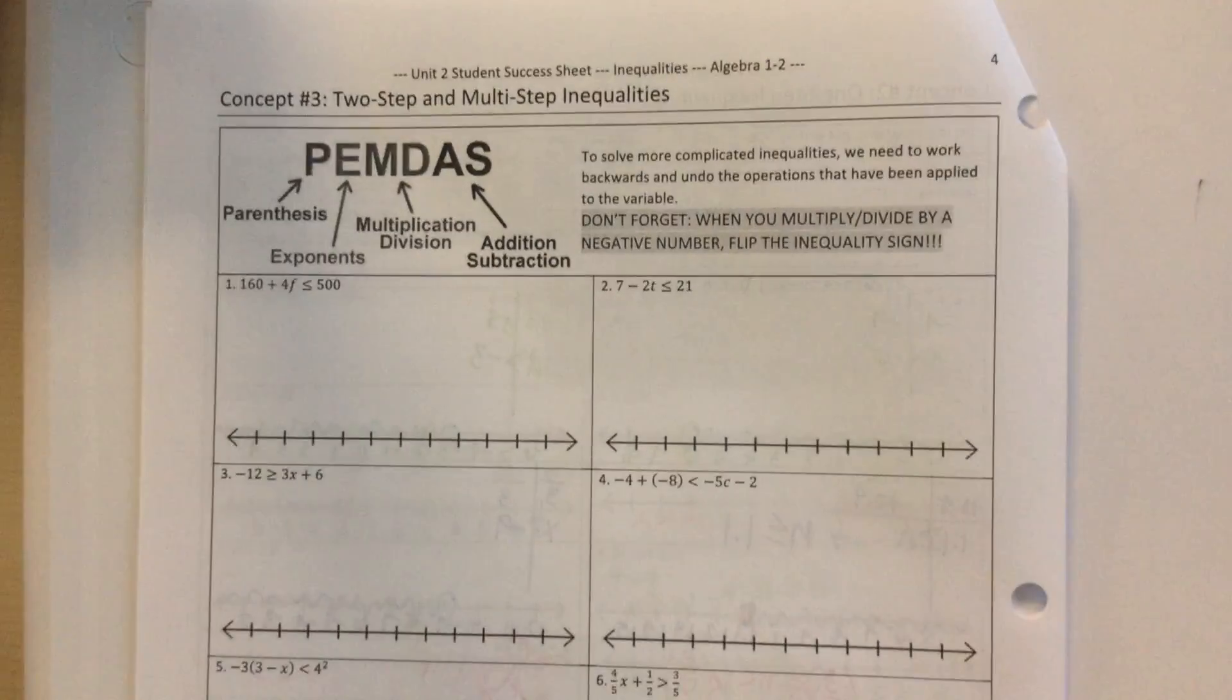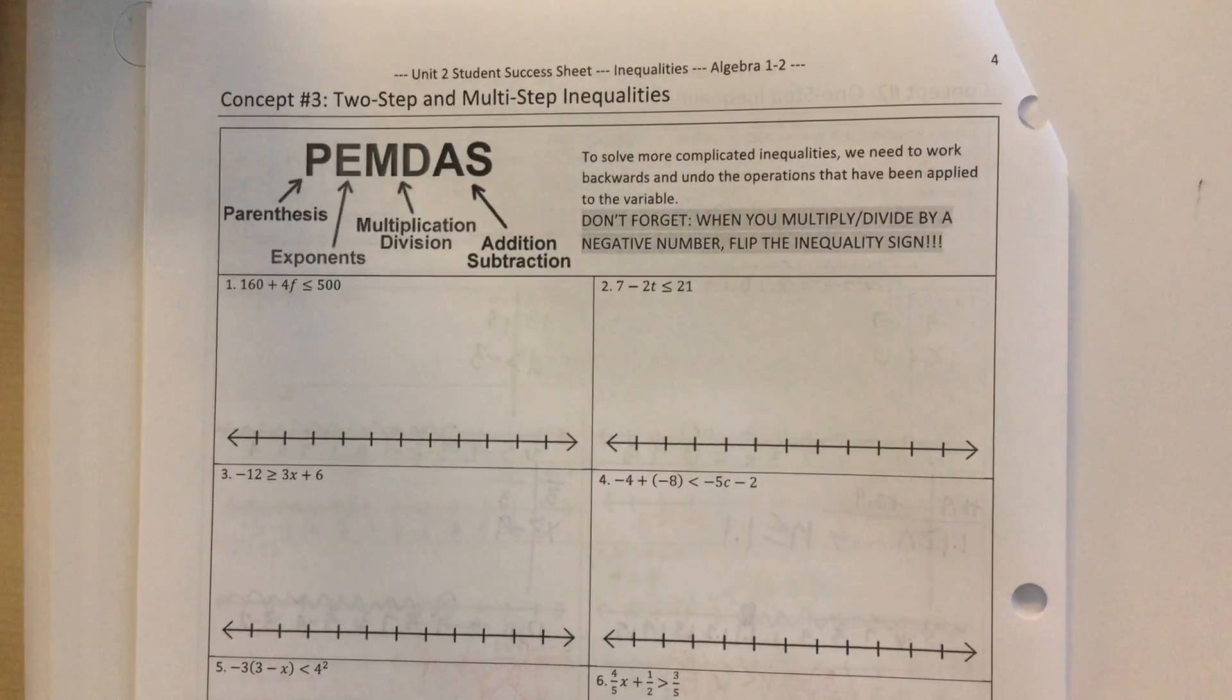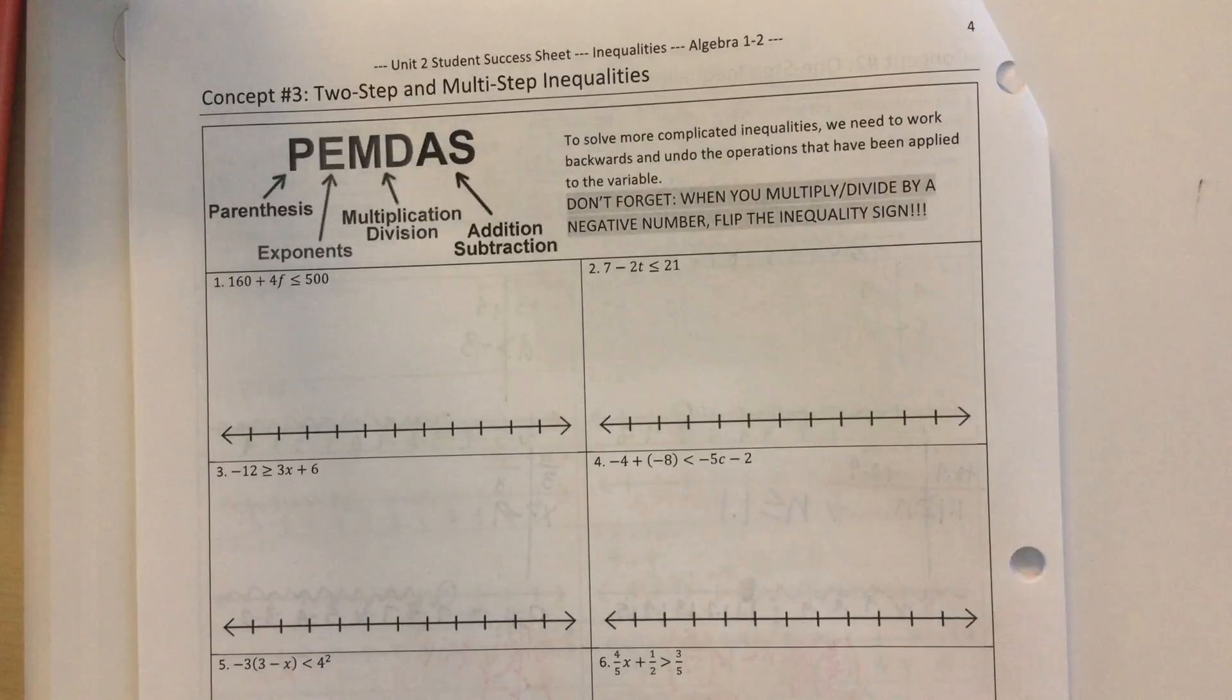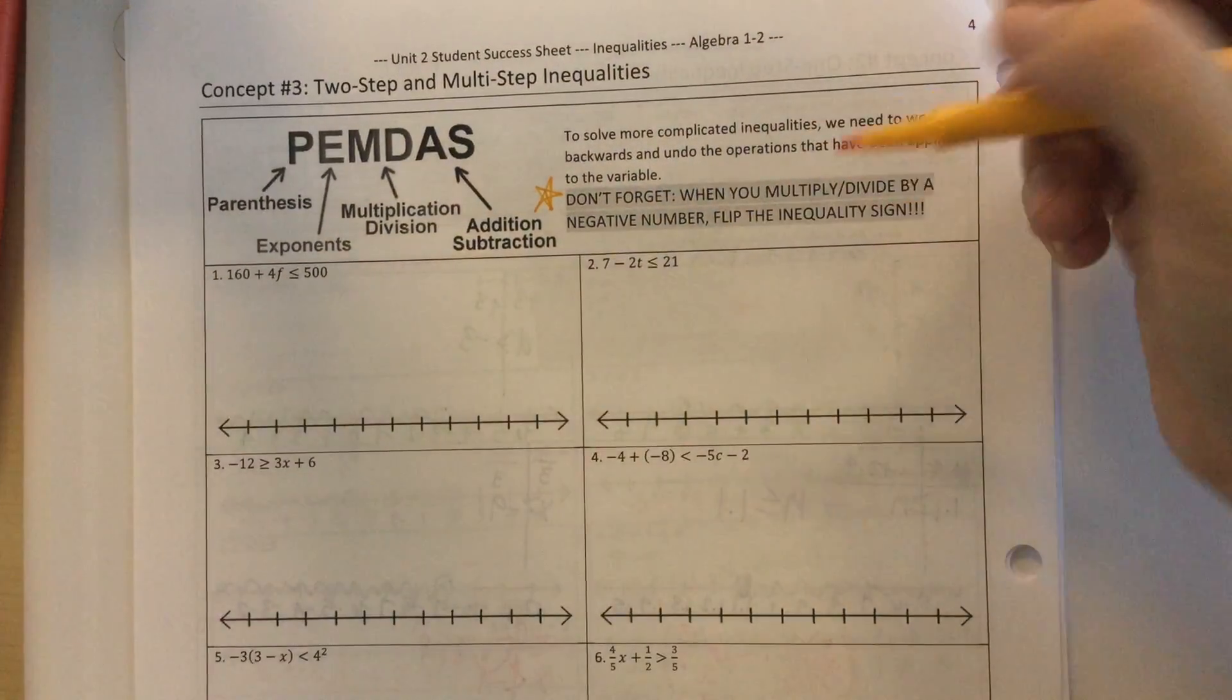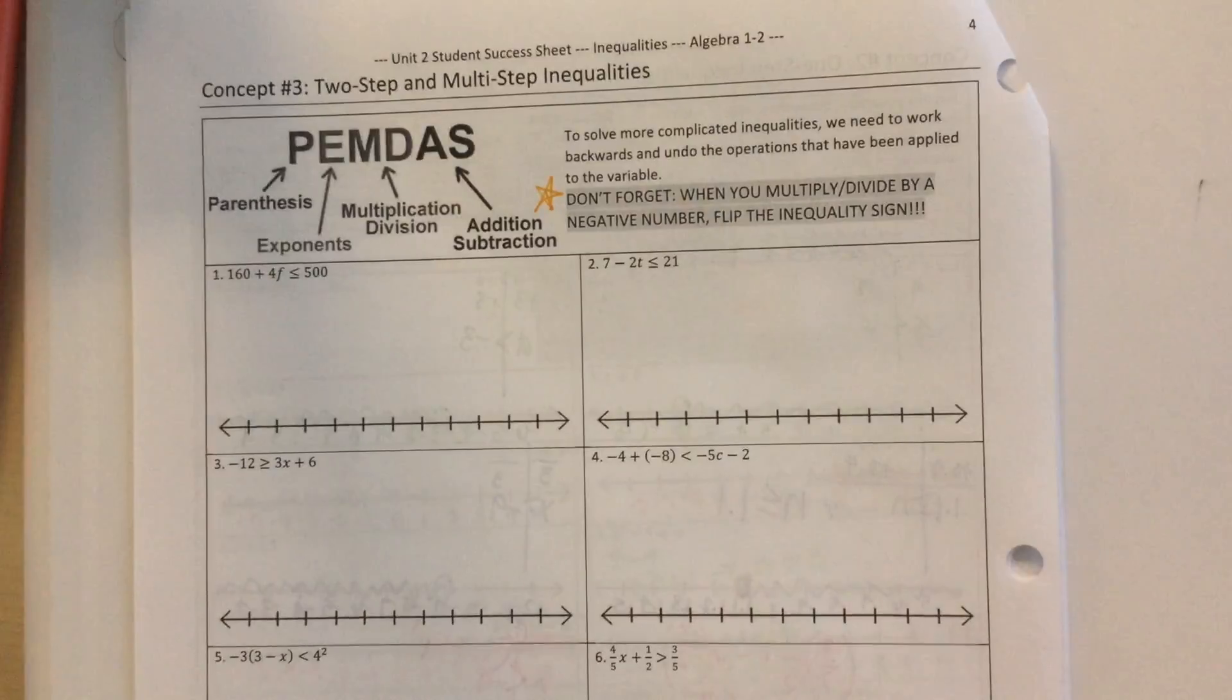Concept 3: Two-step and multi-step inequalities. Again, these are just like equations, only with inequality signs. And the big thing to remember, if you multiply or divide by a negative number, you have to flip the inequality sign. You must remember to do that, otherwise your answer will be incorrect.